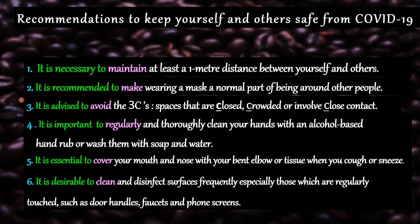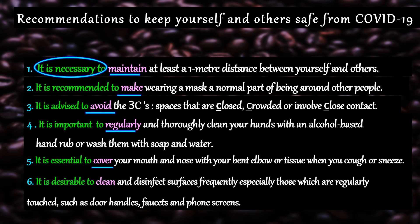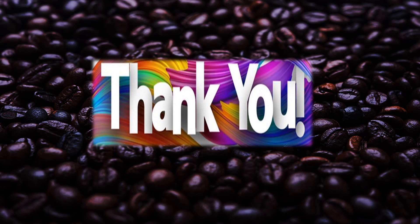I have given a title, numbered the points, and started each statement with a set phrase — 'it is necessary to', 'recommended to', 'it is advised to', 'it is important to', etc. — followed by a root verb. All the sentences after the set phrase make use of a root verb. I hope you have understood. Thank you.